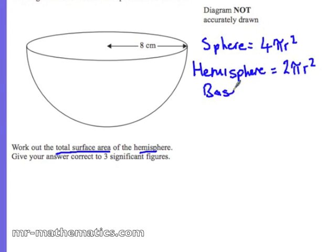Including the base, which is the area of a circle, that is another pi r squared. So the total surface area of a hemisphere will be 2 pi r squared, the curved area, plus the base, which is pi r squared.